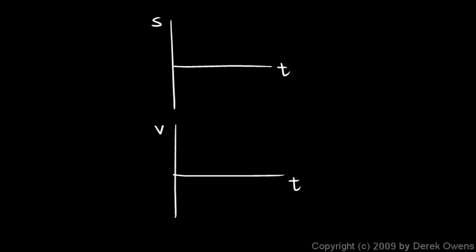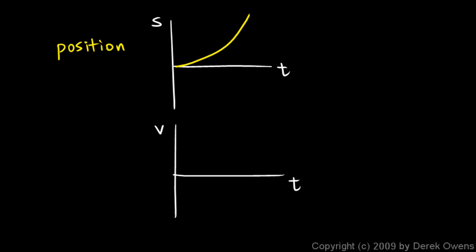What we're going to be doing here is taking graphs of s versus t. We'll be given a graph of s versus t, and our first one looks like this — it's a parabola. From that, we're going to be making a graph of v versus t. Think of this first graph as the position where an object is, showing us where it is at any given moment. Some people use x for position; s is very commonly used for position, coming from the Latin word for spatium. Down here, we'll be making a graph of the velocity.